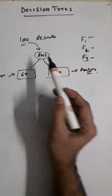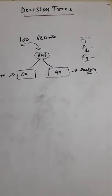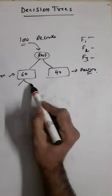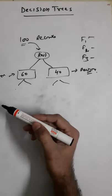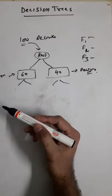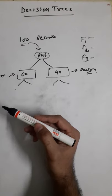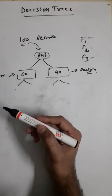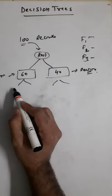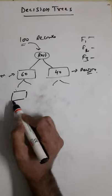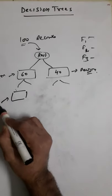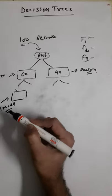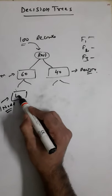Decision nodes are the nodes we get after splitting the root node. We keep splitting until we cannot split further, or splitting doesn't make much difference or sense. Where splitting stops, that final node is termed a leaf node.